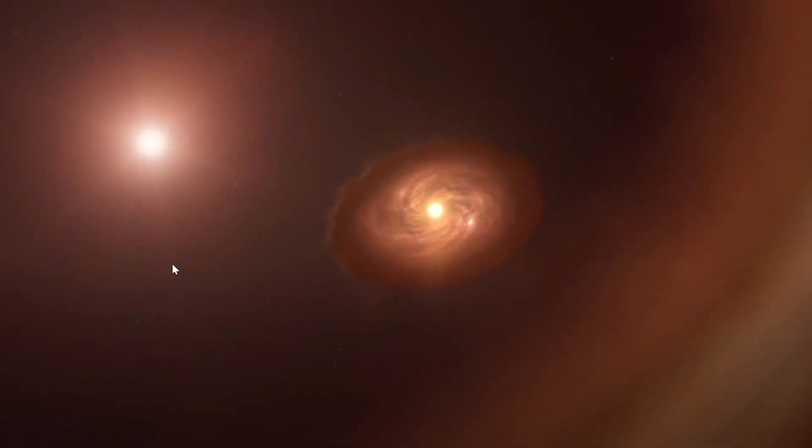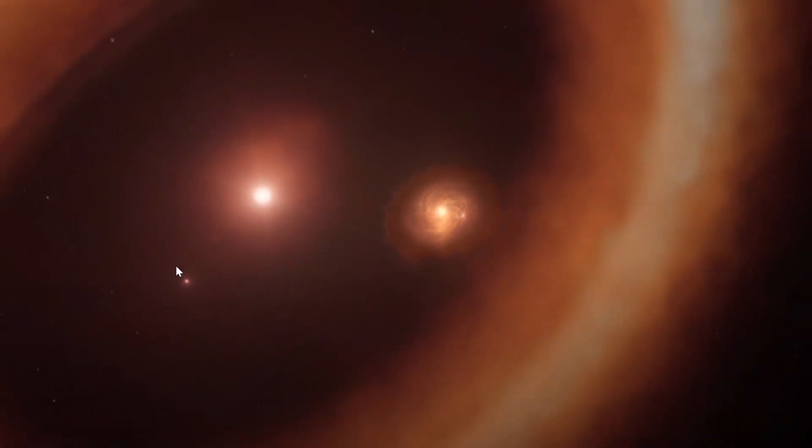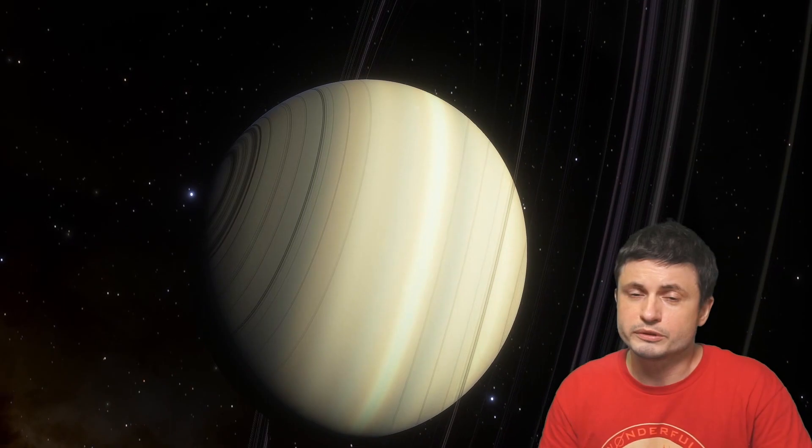Now at the same time, this new analysis also revealed that, interestingly, the partner planet PDS-70b, which is roughly visible right here, does not seem to possess any circumplanetary ring around it. Scientists think it's actually because it was probably stolen by the larger partner over time.